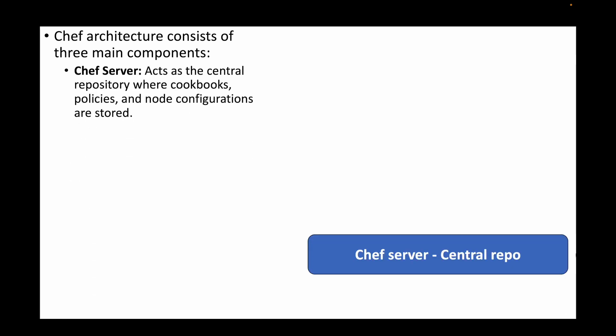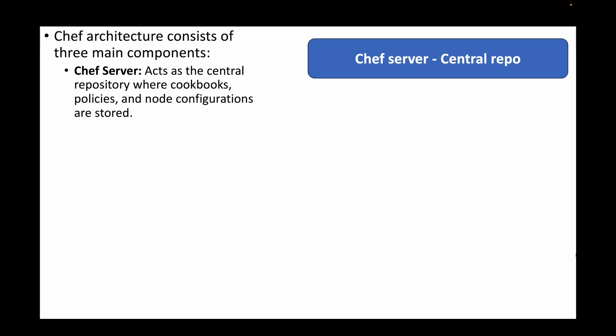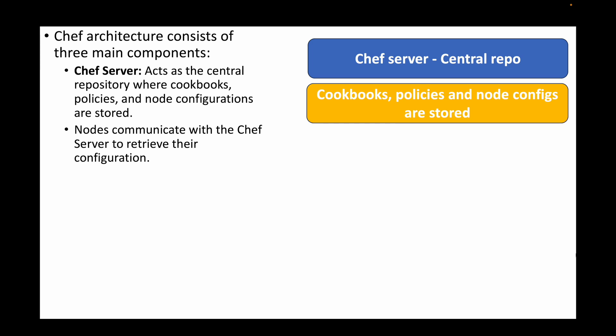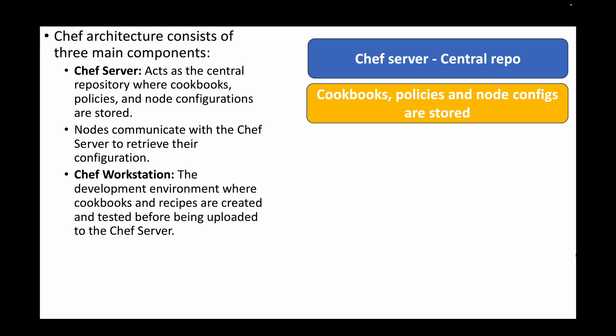The next question is: explain the architecture of Chef. Chef architecture mainly consists of three components. First, we have the Chef Server, which acts as our central server or central repository. This is where all the cookbooks, policies, and node configurations are stored. The remote machines communicate with the Chef Server to retrieve configurations and cookbooks.